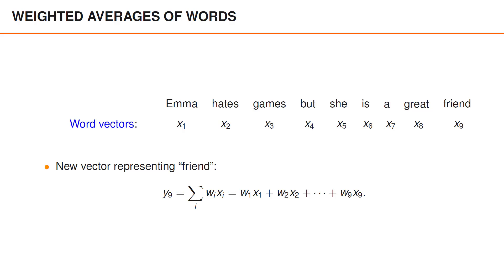so on up until w9 times x9. Note that the weights w1 to w9 are specific for the word friend and that we want to use other weights to compute word embeddings for the other words.